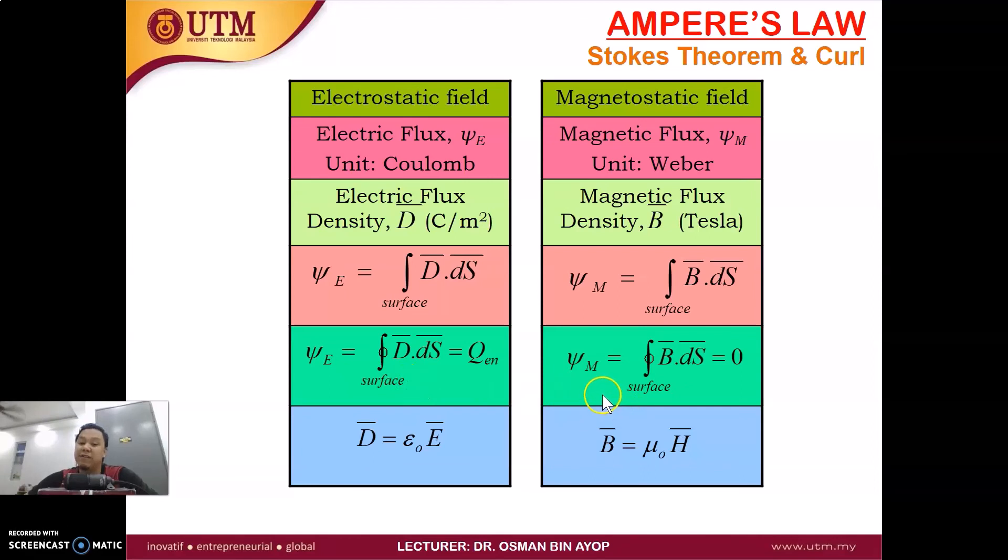We also can determine the electric flux by using the closed integration of D dot dS equal to Q enclosed. So the flux electric depends on the Q enclosed by the surface. However, for magnetic flux, the closed integration of B dot dS is always zero. Because there is no net flux going into the surface. Because the magnetic field basically has north and south poles. For the north pole, the flux will be going out. For the south pole, the flux will go in. So when there is flux going in and going out with the same amount, that's why the net flux for the closed loop will be zero.